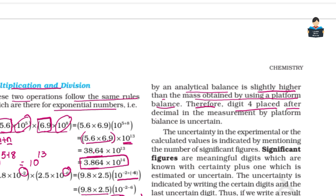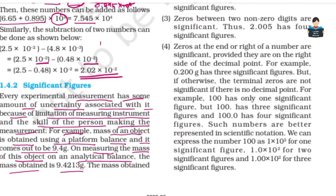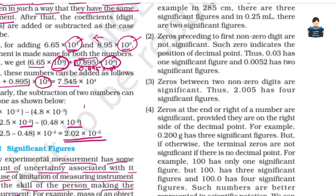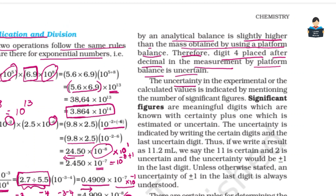Therefore, digit 4 placed after the decimal in the measurement by platform balance is uncertain. That is, in the platform balance, digit 4 is uncertain. The uncertainty in the experimental or the calculated values is indicated by mentioning the number of significant figures.